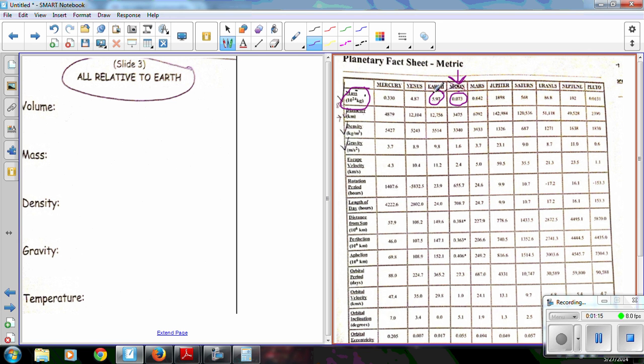Now the mass of the Earth is 5.97 times 10 to the 24th power. And although this is not in proper scientific notation, the moon is 0.073 times 10 to the 24th power.